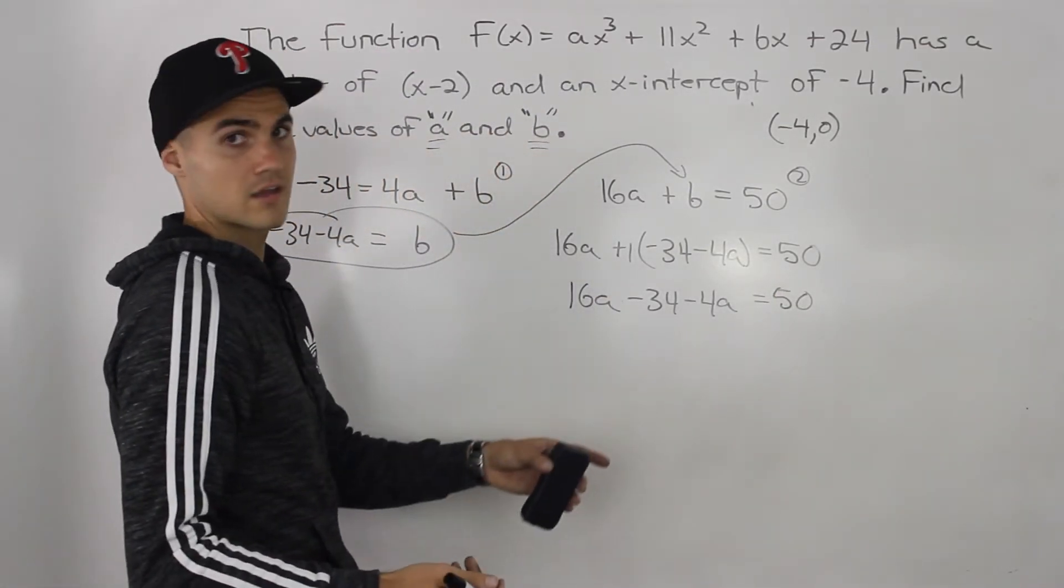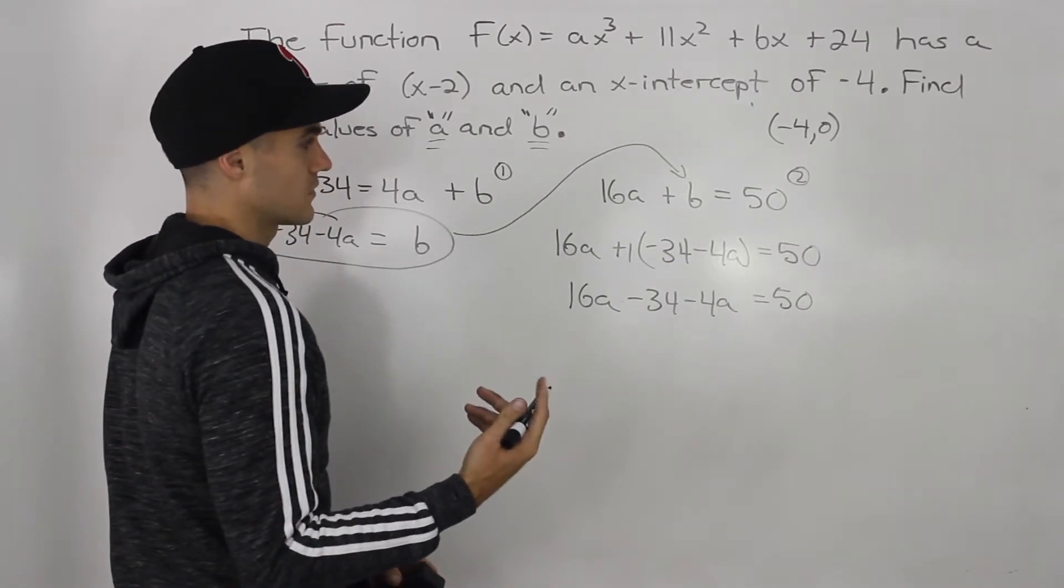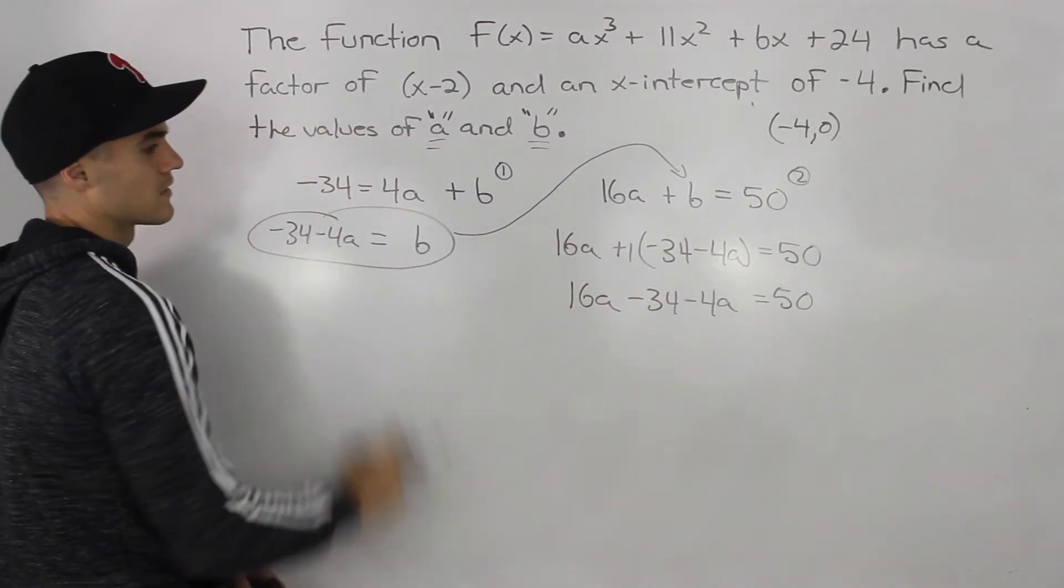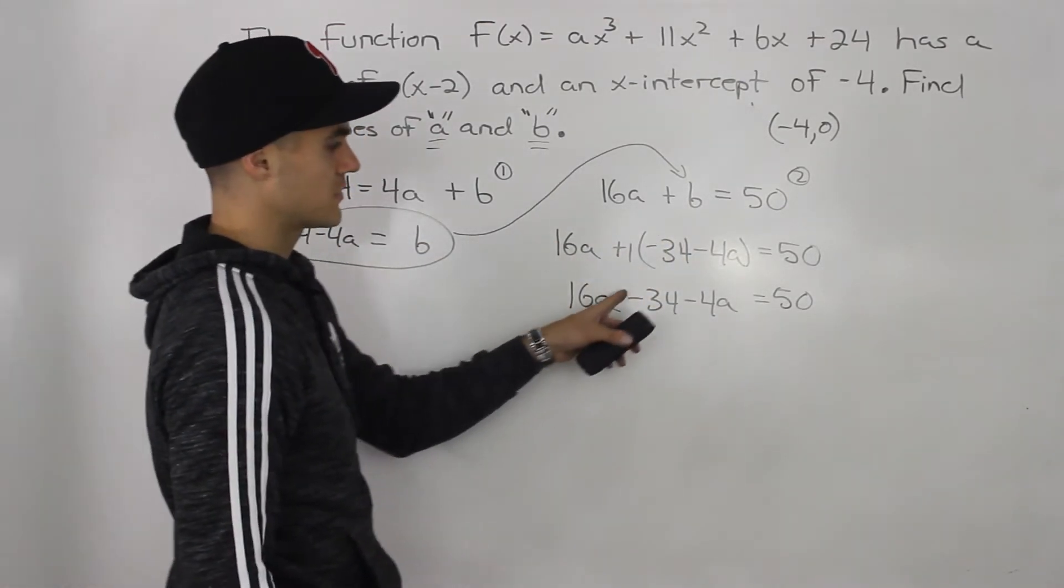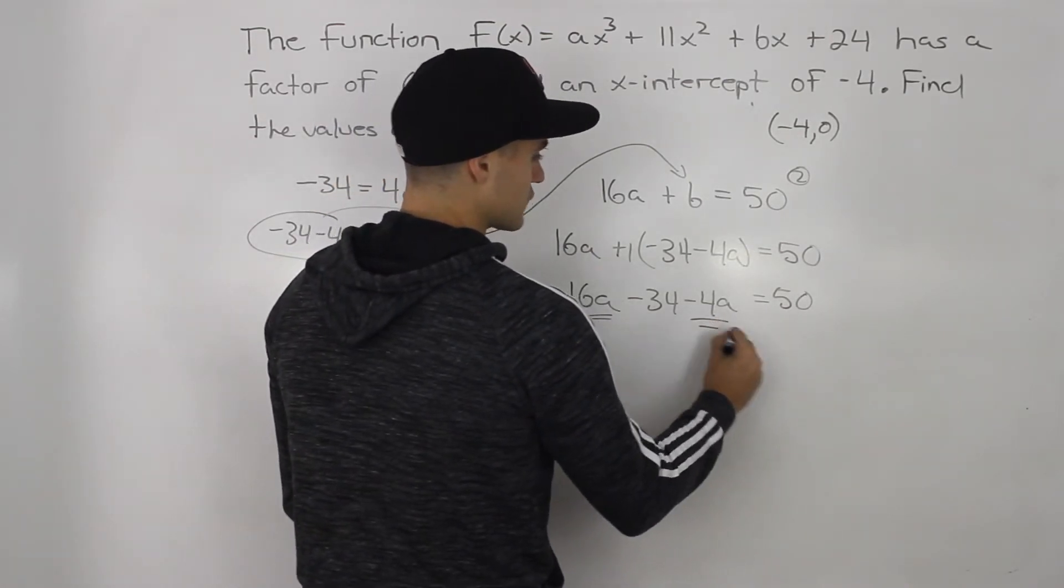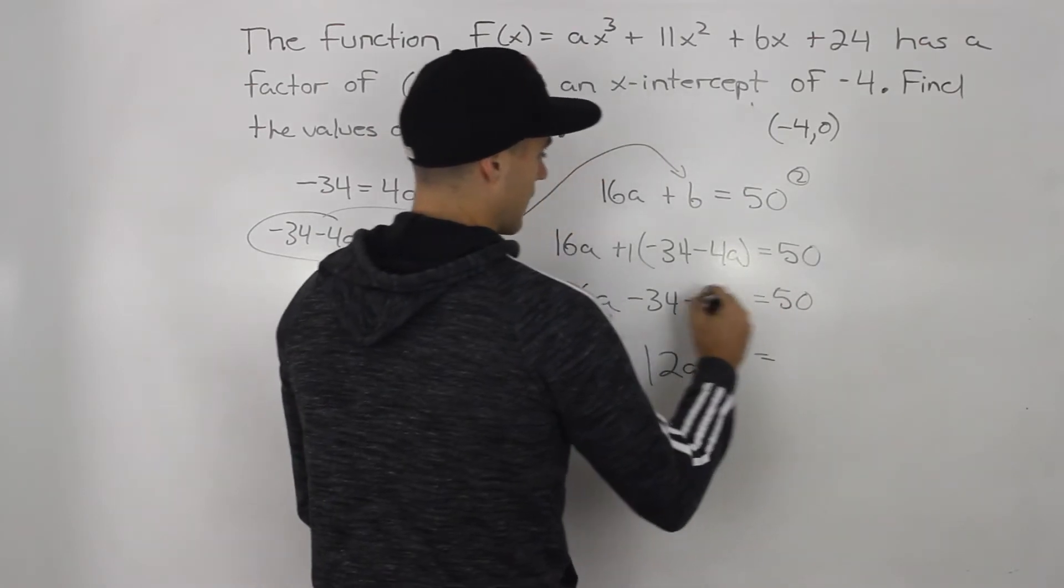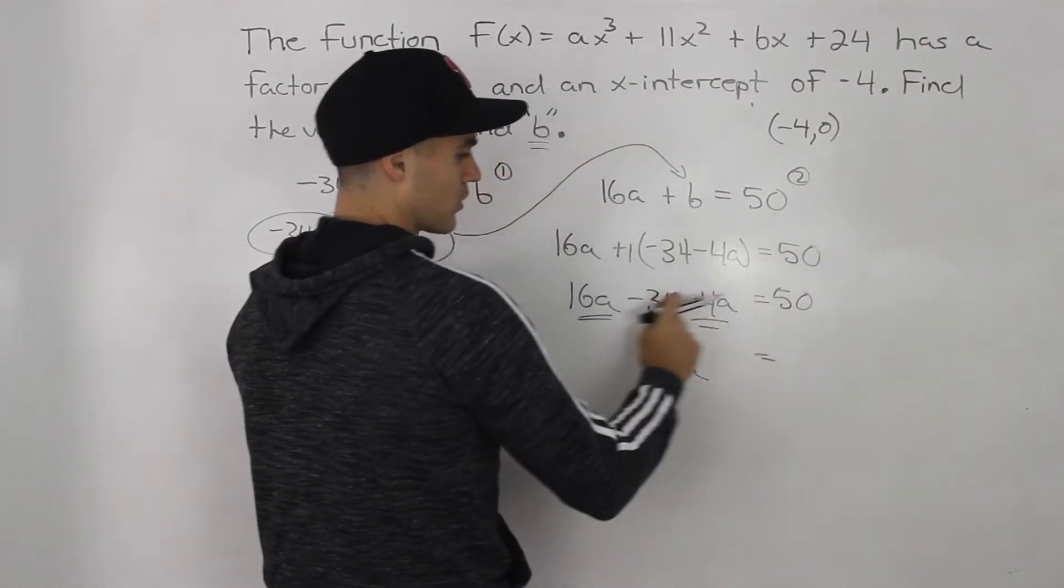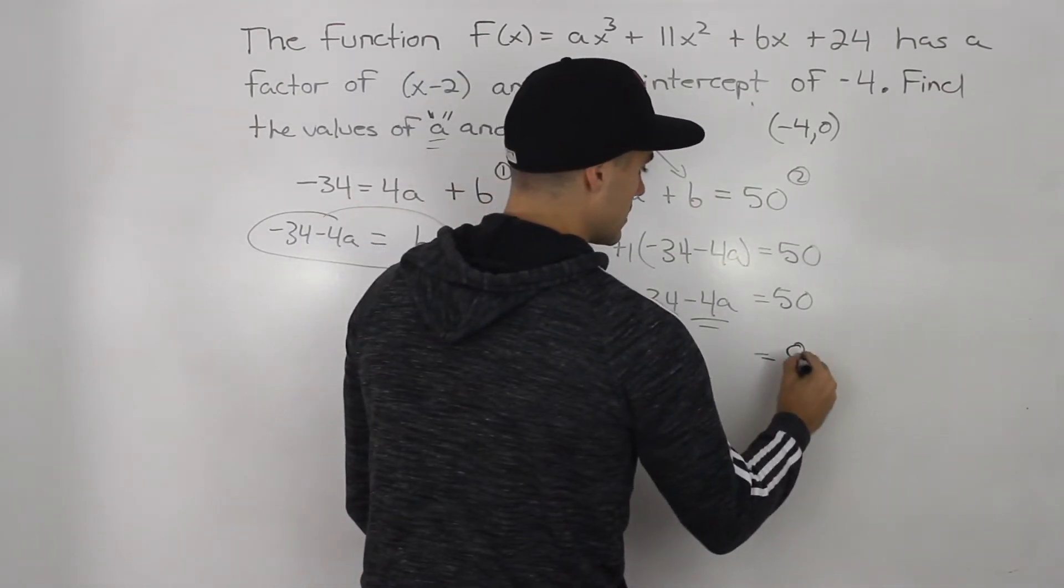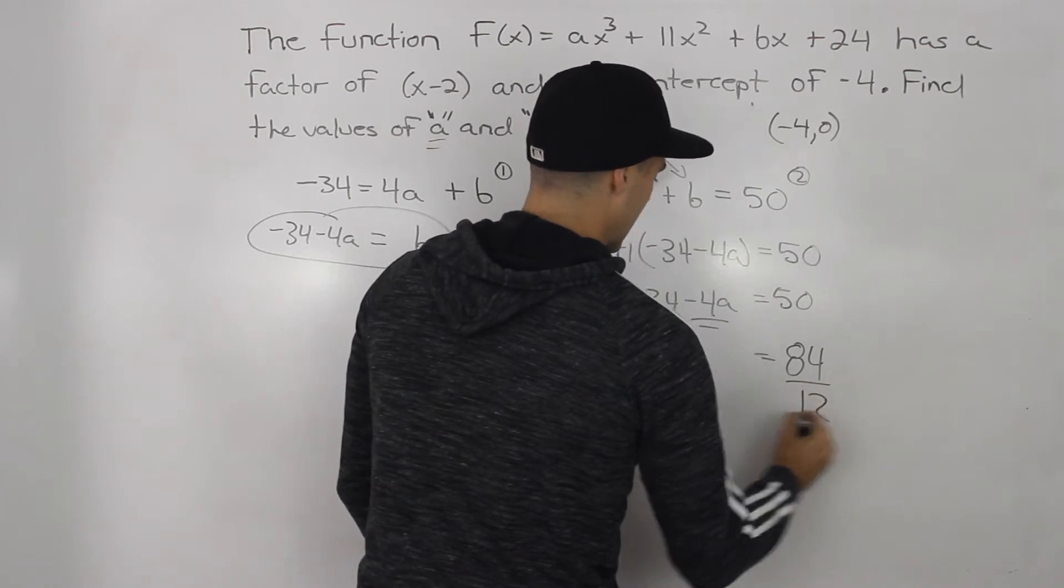So now notice how everything, there's only one variable left, a, right? Because we subbed in for this b value here, this expression. So let's bring this negative 34 over. And then we'll have 16a minus 4a on the left side. So that will be 12a. And then 50 plus 34, right? Negative 34 becomes positive when we bring it over. That would be 84. Divide both sides by 12 to get that a by itself. So a is equal to 7.